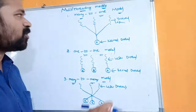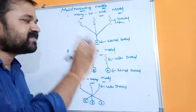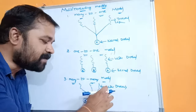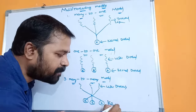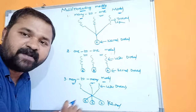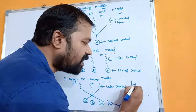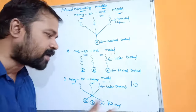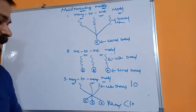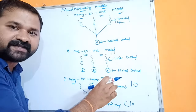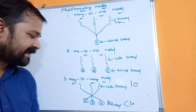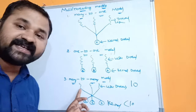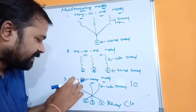The many-to-many model solves the limitations of both the many-to-one model and the one-to-one model. As the name suggests, many user threads are mapped to an equal or lesser number of kernel threads. So if there are 10 user threads, the number of kernel threads is either 10 or less than 10. Multiple user threads are mapped to corresponding kernel threads.